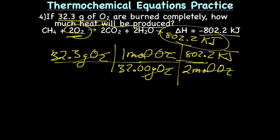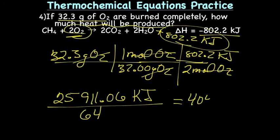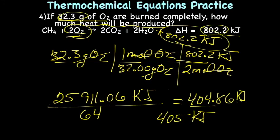The mole O2 units cancel out. Multiplying across the top gives 25,911.06 kilojoules; multiplying across the bottom gives 64. Dividing gives us approximately 404.86 kilojoules. And that's all there is to it — have a good one.